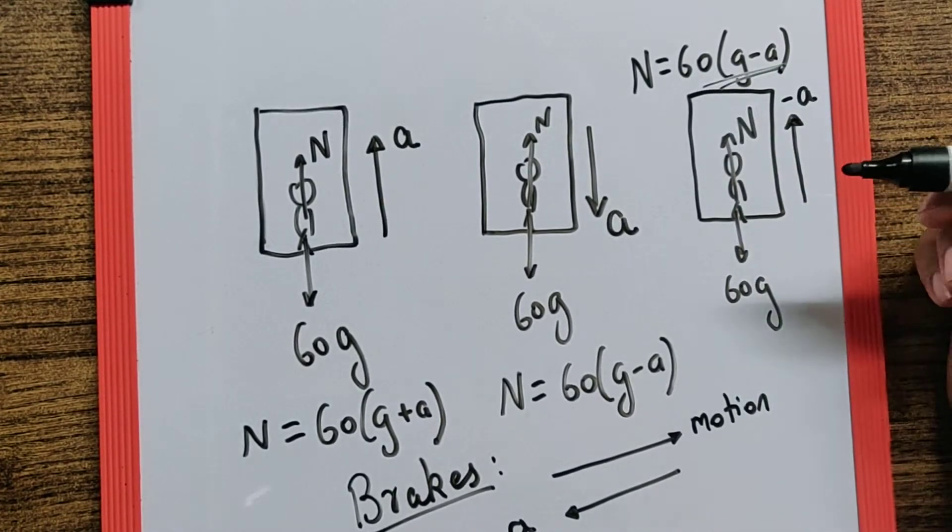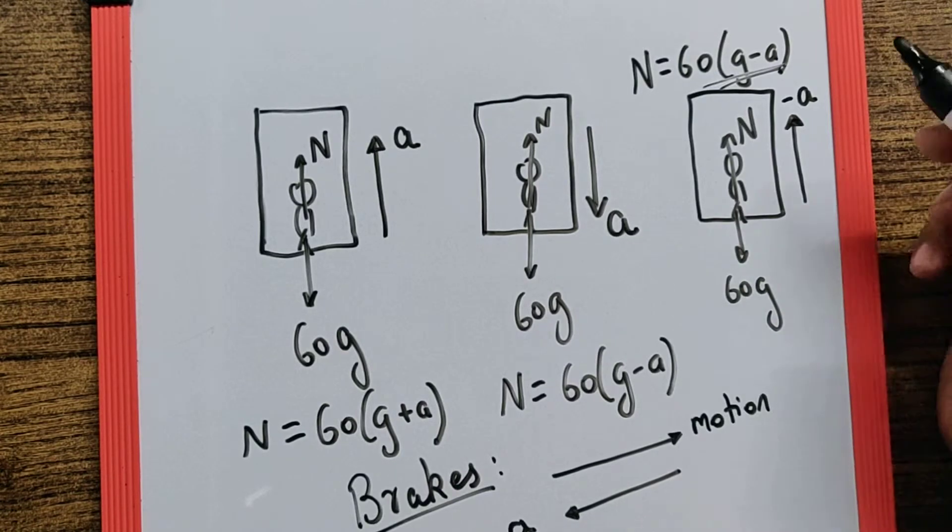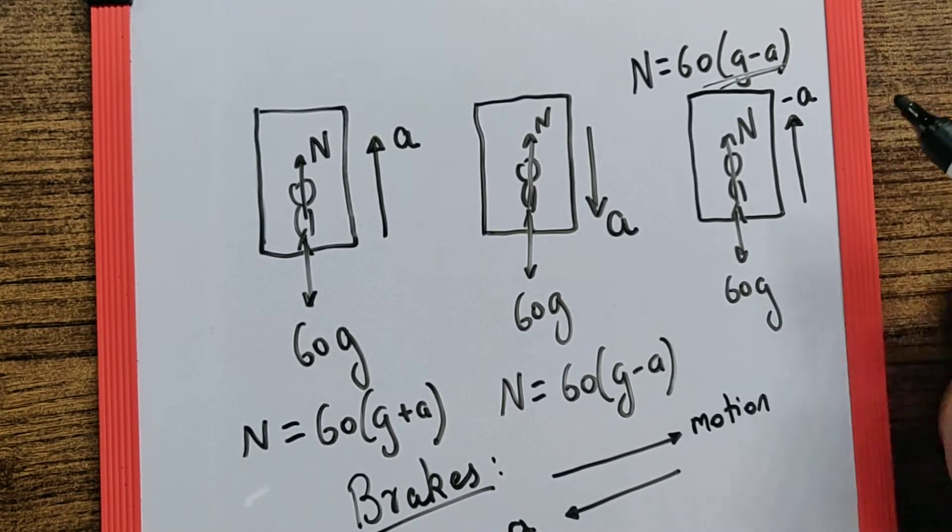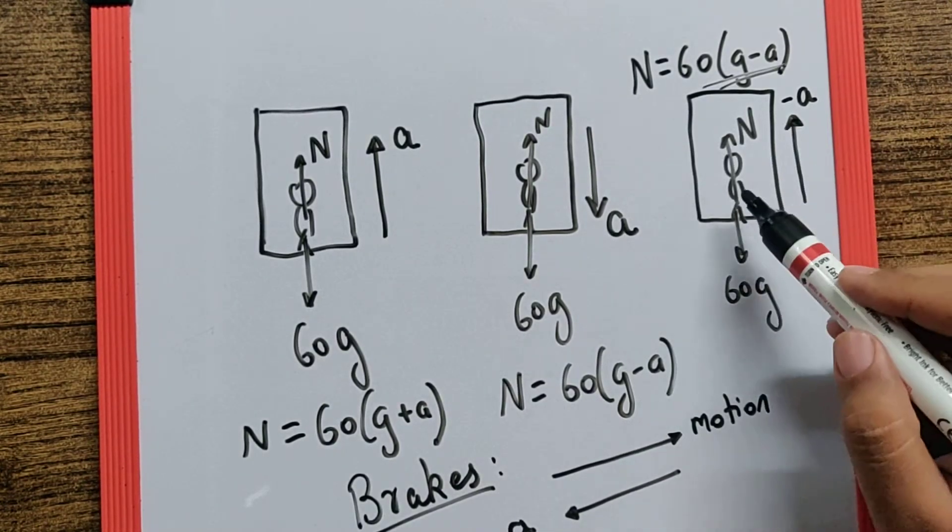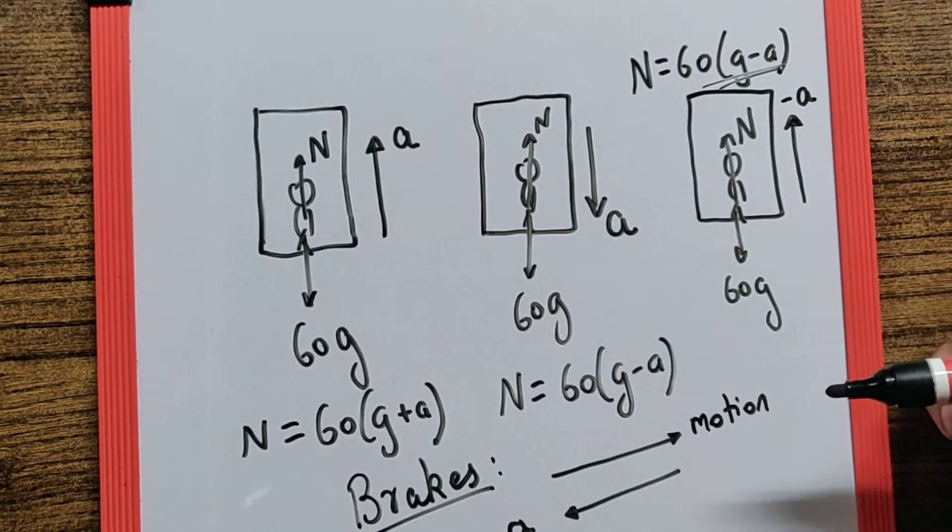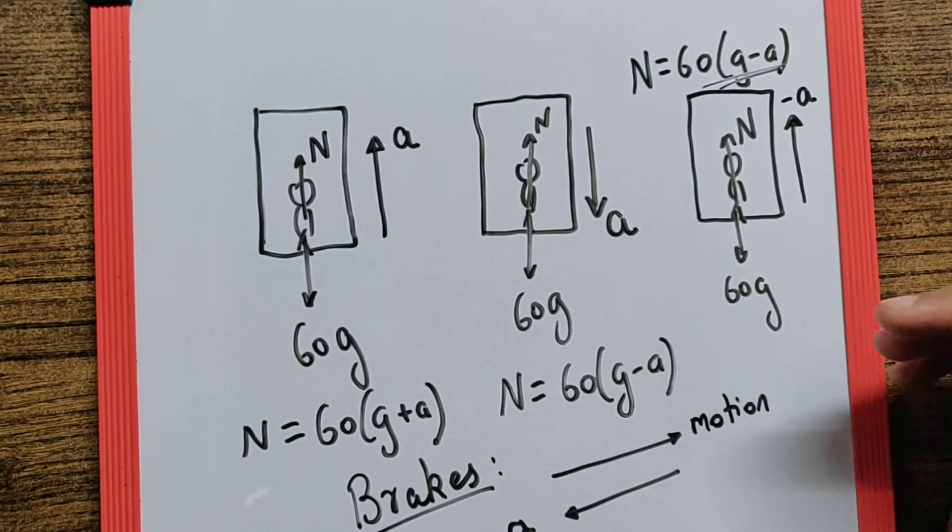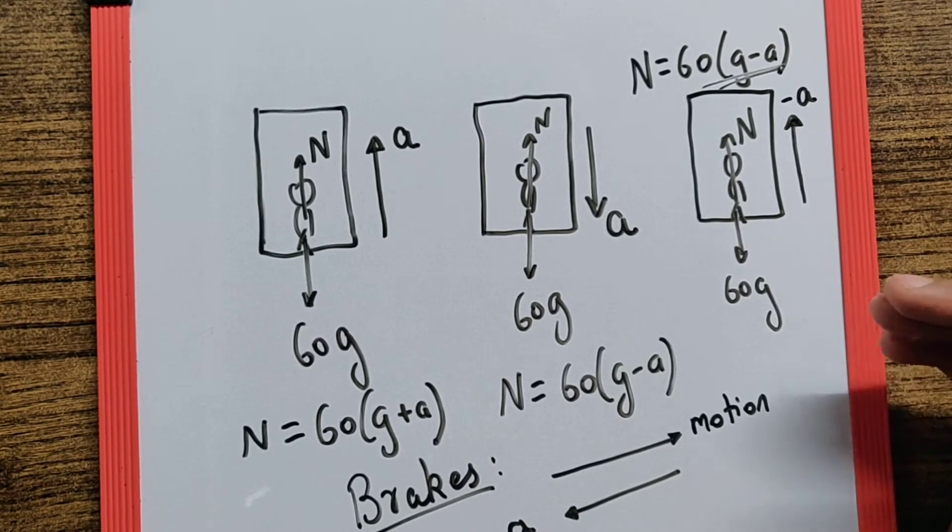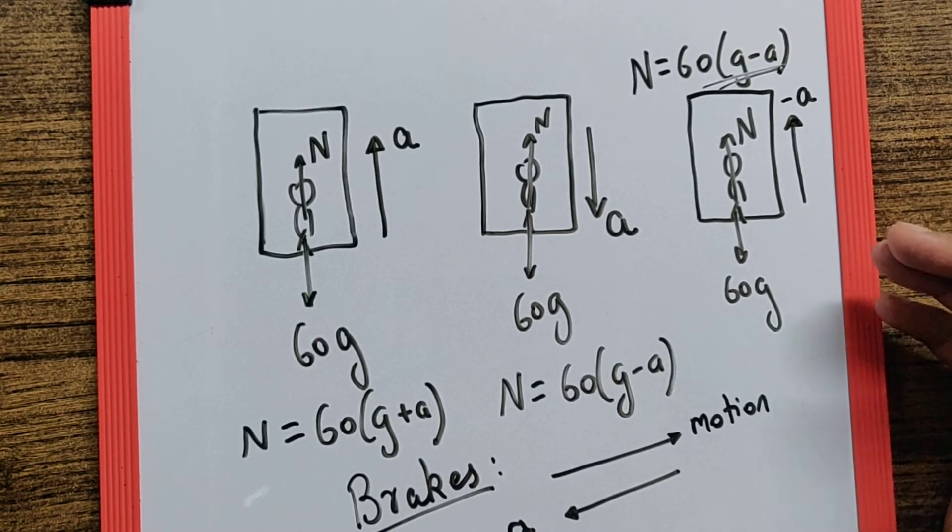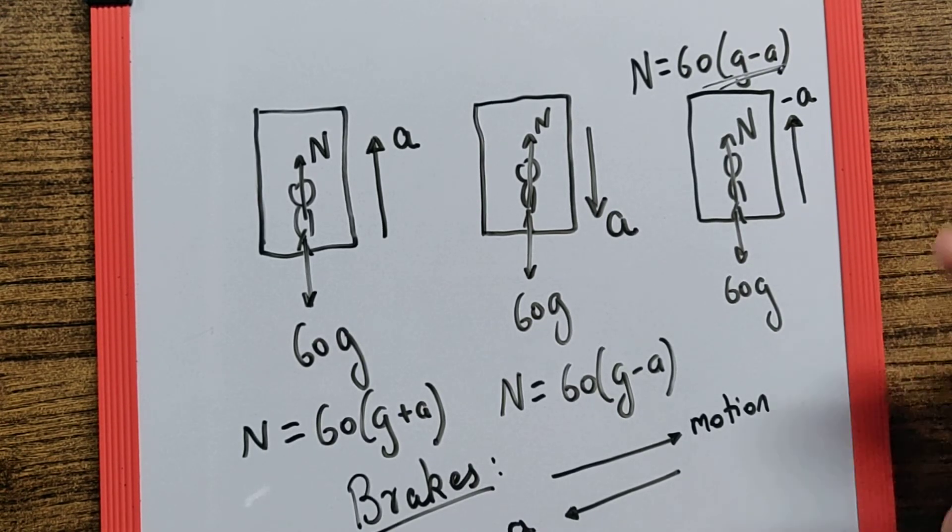The only possible explanation over here is that the lift is moving down and slowing down with a retardation a. So the correct answer for this should be the lift while in constant motion upwards is stopped suddenly.